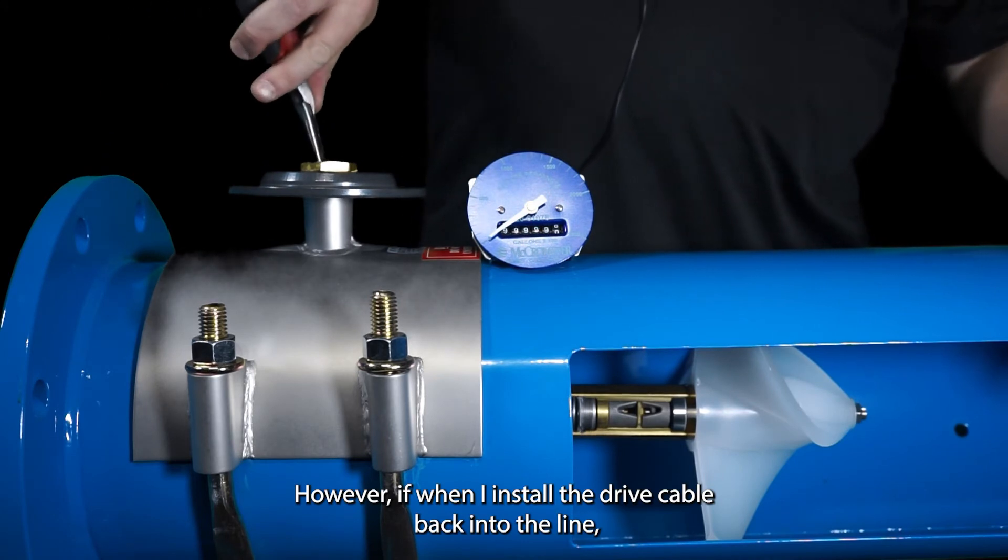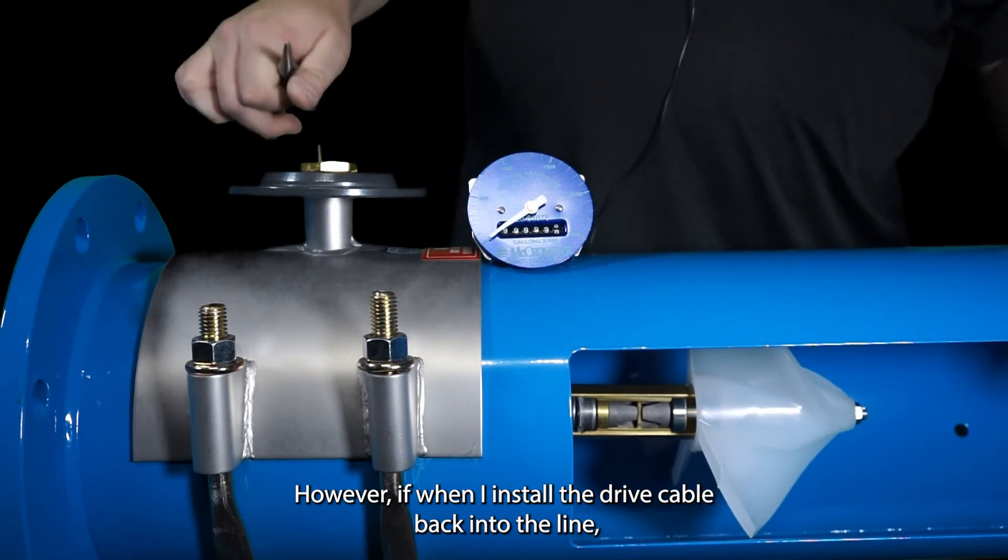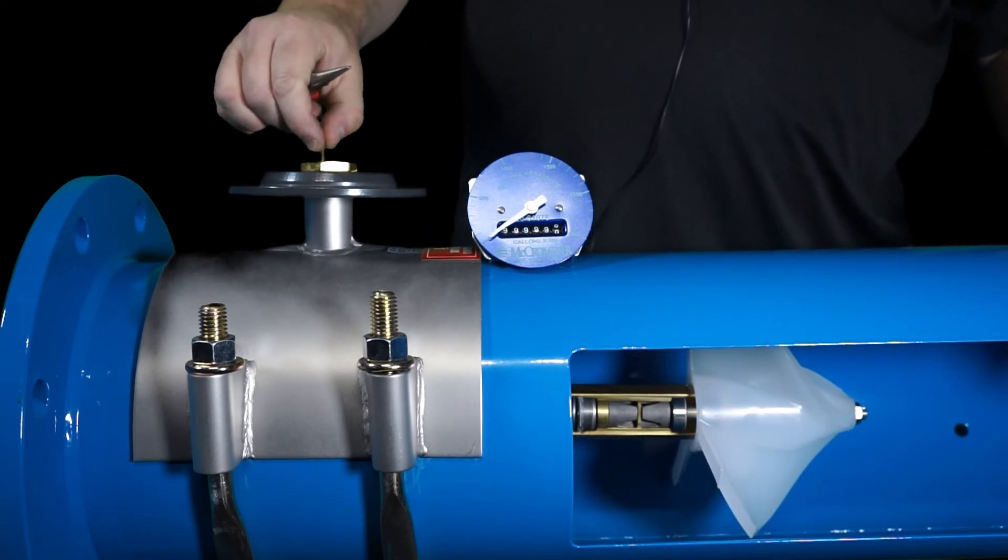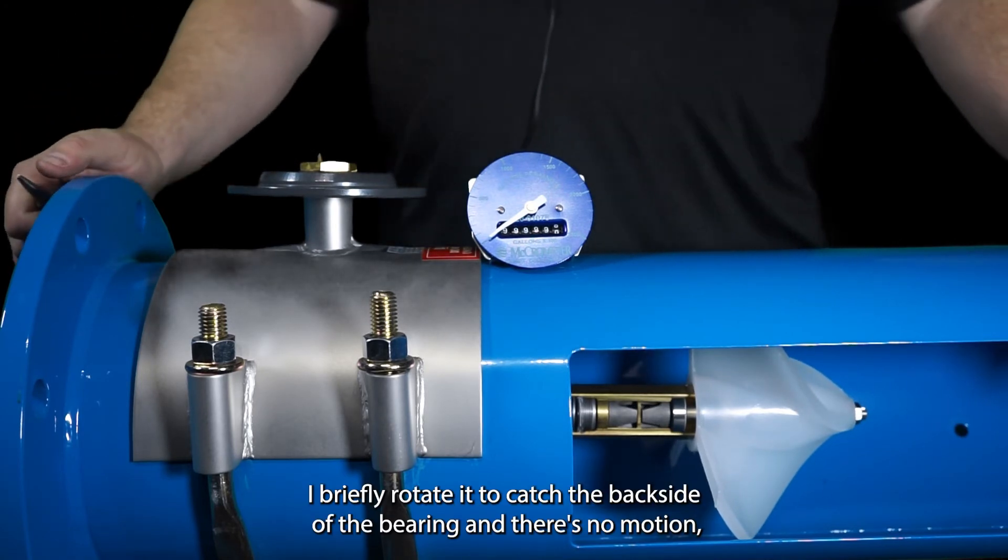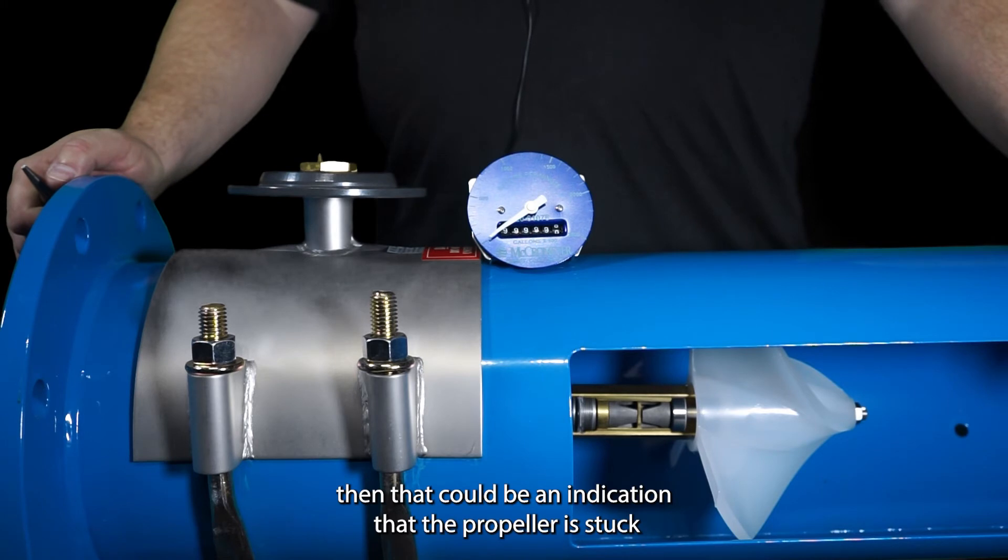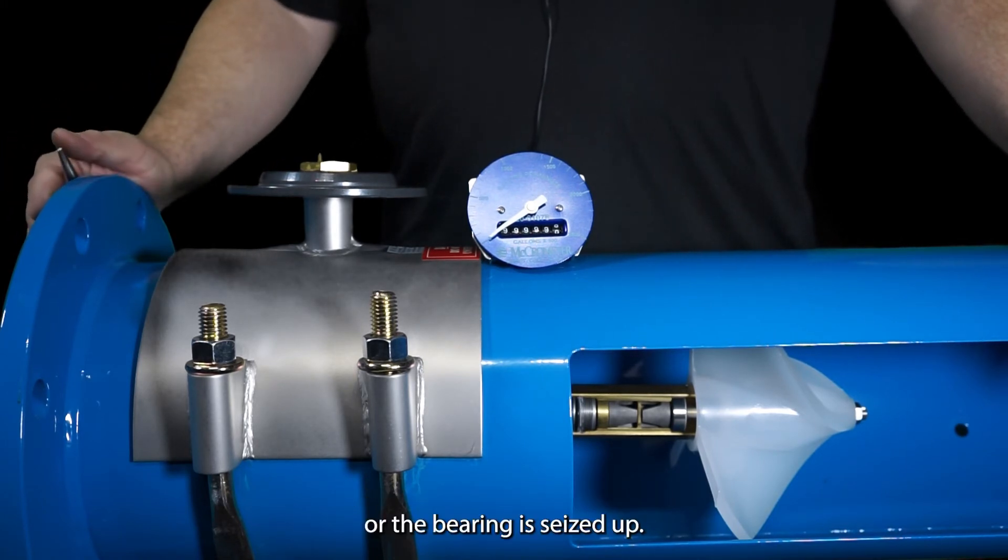However if when I install the drive cable back into the line I briefly rotate it to catch the back side of the bearing and there's no motion then that could be an indication that the propeller is stuck or the bearing is seized up.